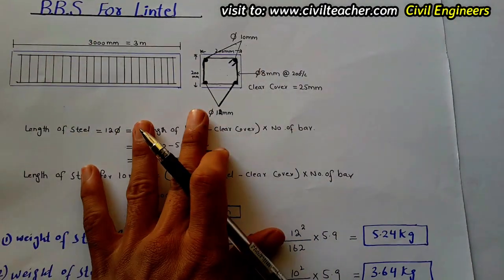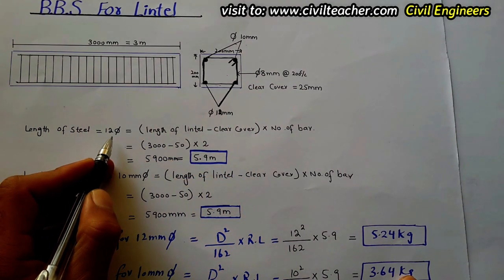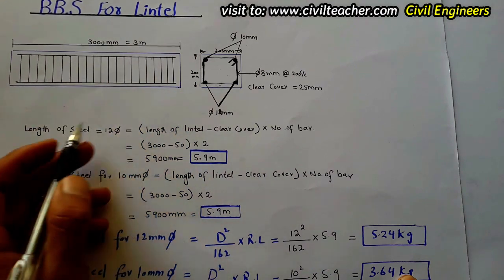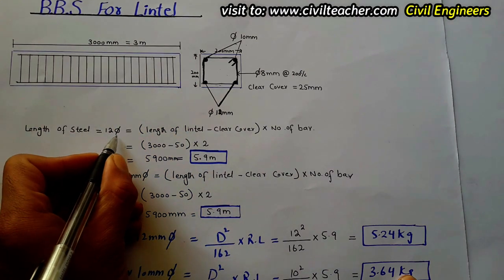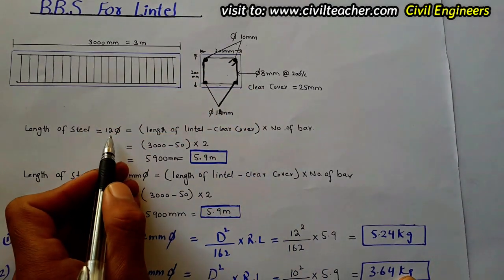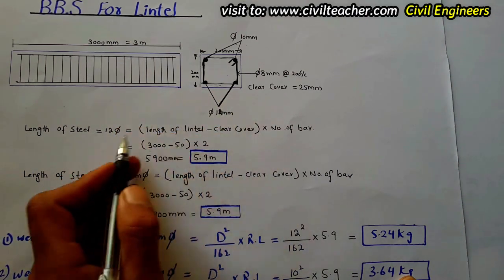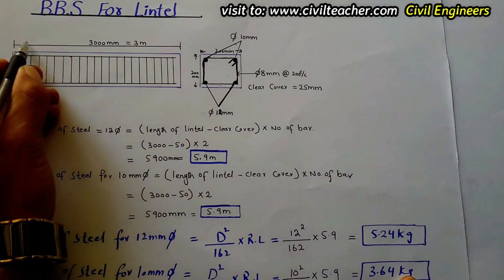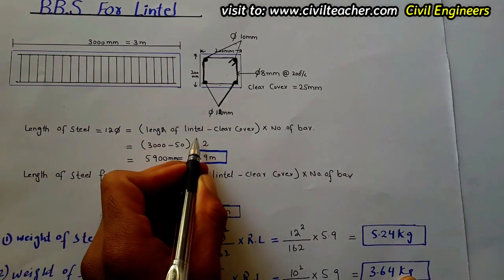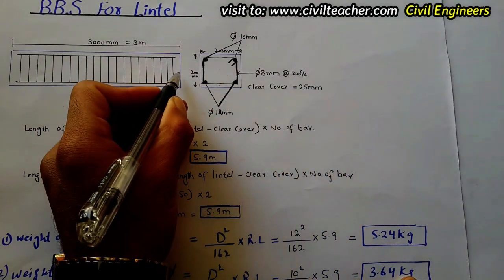Now let's start. We have to find the cutting length of steel for the lintel. First, the length of steel for the 12 mm diameter bars — these are the main bottom bars. The formula is: length of lintel minus clear cover, multiplied by number of bars.